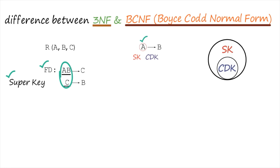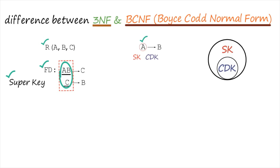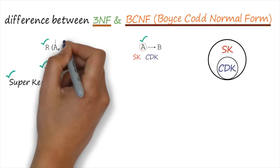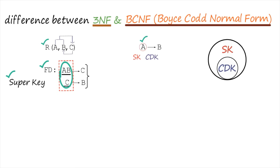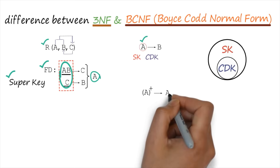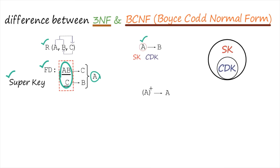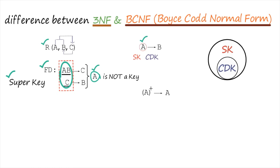Let's check the critical aspects of this example. To prove whether this relation is in Boyce-Codd Normal Form, I have to prove the LHS part is a candidate key or super key. I will draw the AGE diagram. From AB, I am getting C. From C, I am getting B. A is not on the right-hand side, so A is the essential attribute. From A, I am getting only A — no other attribute is reachable.